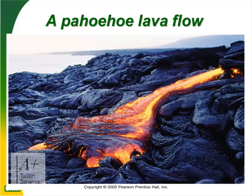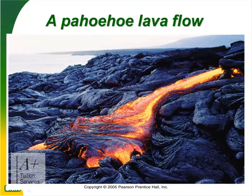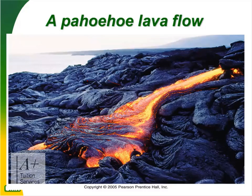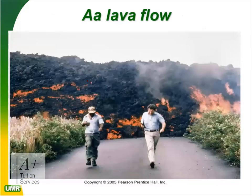Pāhoehoe lava flow looks like slime — it's runny but moves slowly, not fast like water. When it cools it solidifies into layers. The red glowing lava in the center is what's coming out of the volcano; the black material on the sides has already cooled and solidified into rock, turning black with ash and dust from the magma.